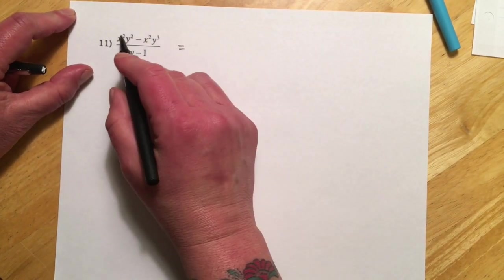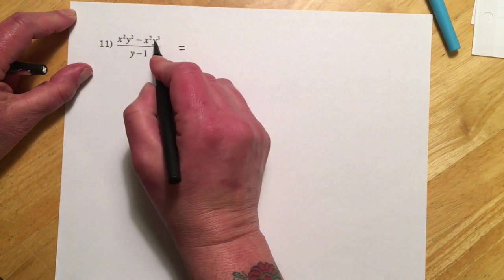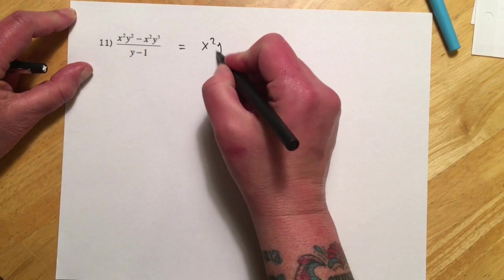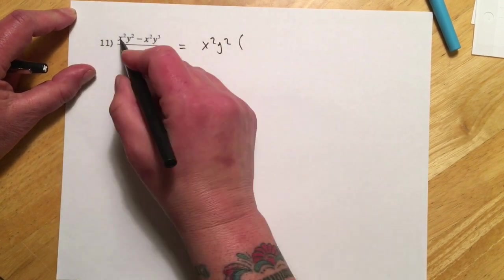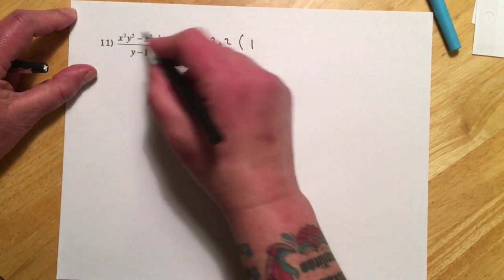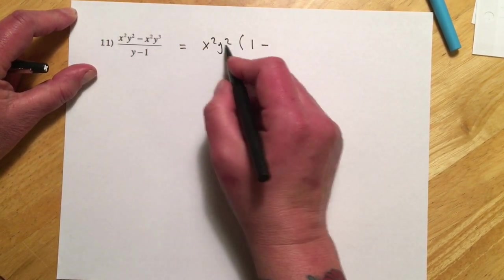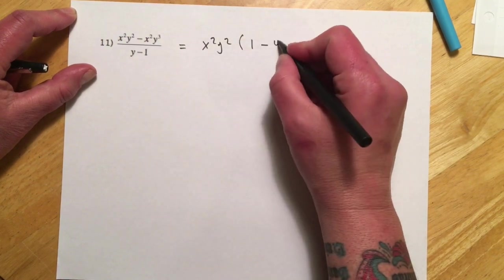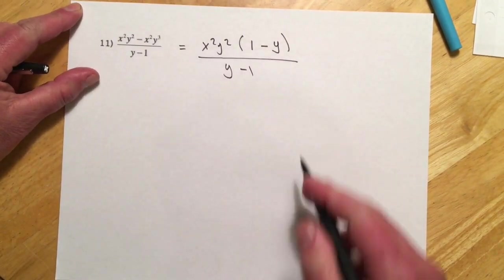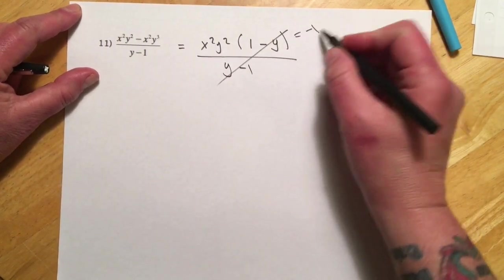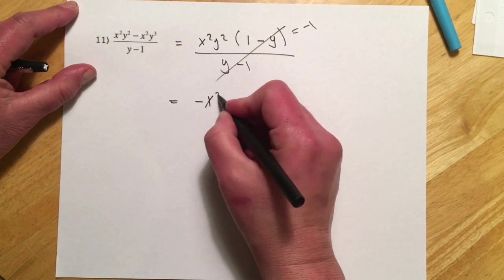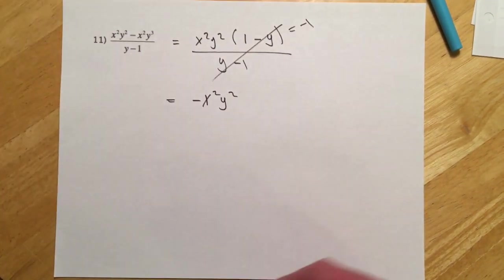Last one. So this is, it's not a difference of squares because of that y cubed there. But it does have a GCF of x squared, y squared. And so when I take that out of here, I just need a 1 placeholder. So when I distribute, it comes back. And here I'm taking all the x's and 2 of the 3 y's. So that's going to be a minus y right there. And then right there's our negative 1. So this is just going to be negative x squared, y squared. Cool. So that concludes reducing rational expressions.